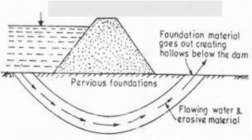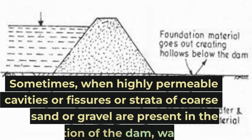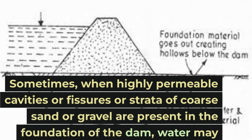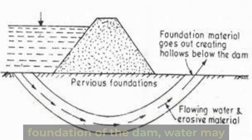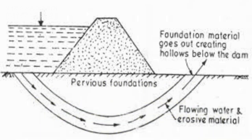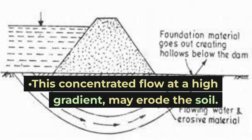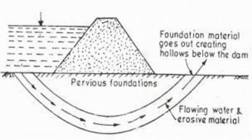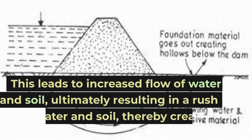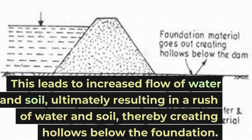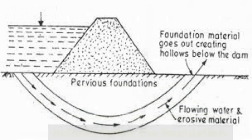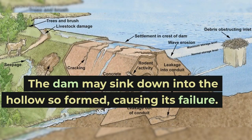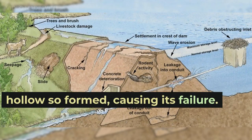1. Piping through foundations. Sometimes, when highly permeable cavities, fissures, or strata of coarse sand or gravel are present in the foundation of the dam, water may start seeping at a huge rate through them. This concentrated flow at a high gradient may erode the soil, leading to increased flow of water and soil, ultimately resulting in a rush of water and soil, thereby creating hollows below the foundation. The dam may sink down into the hollows so formed, causing its failure.